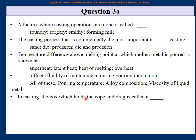In casting, the box that holds the cope and drag is called a flask. Riser, runner, and gate are wrong — those are internal mold components. Just as a thermos flask is a container that keeps liquids hot or cold, in casting the flask is the outer container holding all the mold components. That completes the multiple choice part of quiz number two.